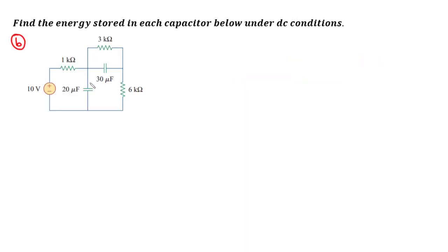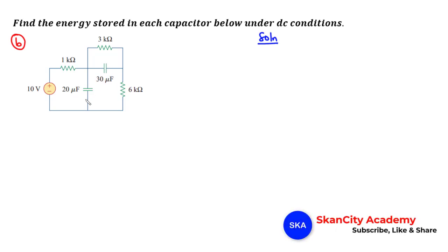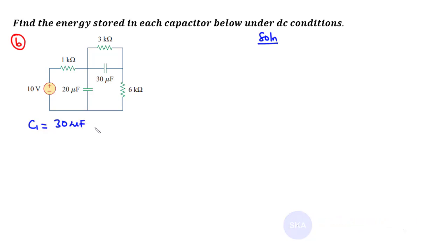For the second example, we again find the energy stored in each capacitor. We have two capacitors: C1 equals 30 microfarads and C2 equals 20 microfarads. We have a 10 volt source with these two capacitors and resistors connected in the circuit. Under DC conditions, capacitors behave as open circuits, so we redraw the circuit eliminating the capacitors and introducing open circuits.